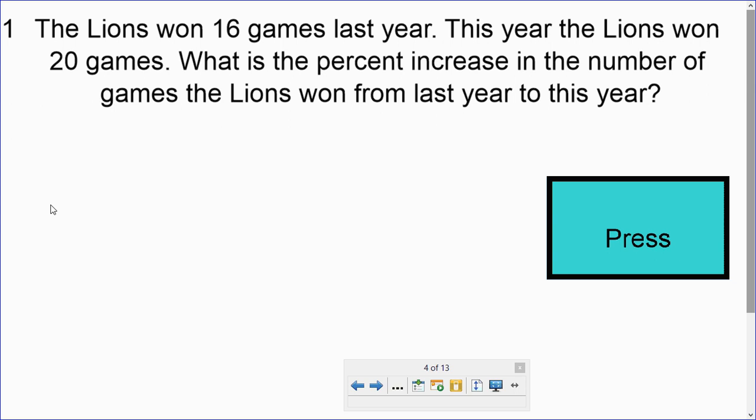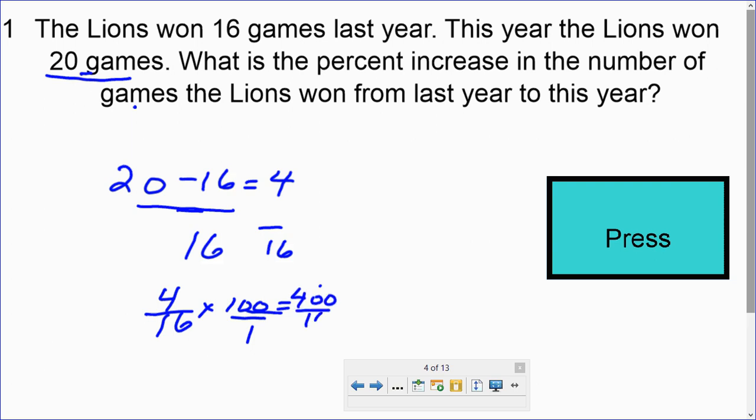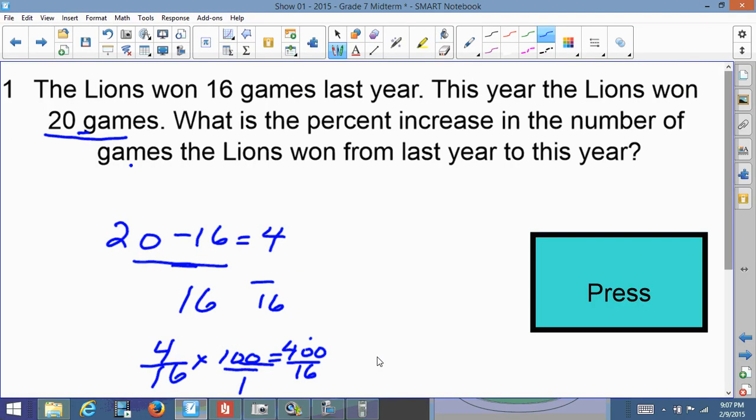So this year they won 20 games. Last year they won 16. So let's find the difference between those two. So there's a difference of four games. We're going to put all of that over last year's amount of games, which will be 4 over 16, and multiply that by 100.